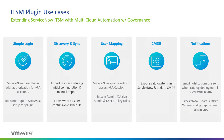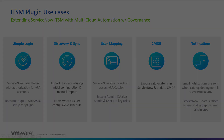Finally, on the notification side, email notifications are sent when a catalog deployment is successful in VRA. There are many switches and configuration settings to control when these notifications are triggered and at what stages. ServiceNow tickets are also raised when a catalog deployment or day-two action fails in VRA. That takes us to the end of part one — thank you for watching, and we'll see you in the next one.